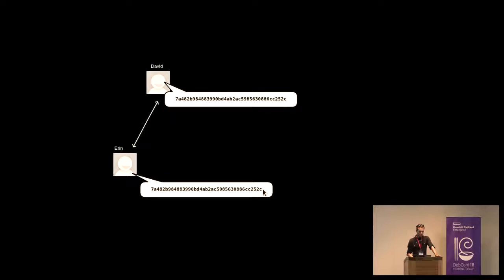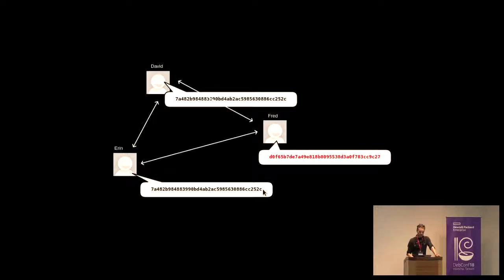Just run through an example here. David builds a piece of software and gets a particular hash of 7A48. He tells everyone, I'm David, I built this piece of software, I get this particular hash. Then Erin builds the same software. I, too, get 7A48. This is looking pretty good. We all seem to agree on if we start with the same source and compile, we get the same binary.